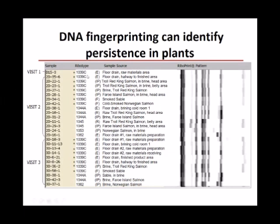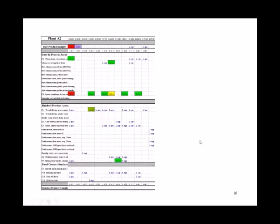Every time we visited that facility, we found the same Listeria monocytogenes in the environment and on different products — products made from raw materials that came from as far apart as Alaska and Norway. Raw material comes from 1,000 miles apart, goes into the plant, and is contaminated with the same Listeria monocytogenes fingerprint found in the facility. This is a pretty clear indication that contamination is happening in that facility, and that this Listeria monocytogenes subtype survived across all five visits.